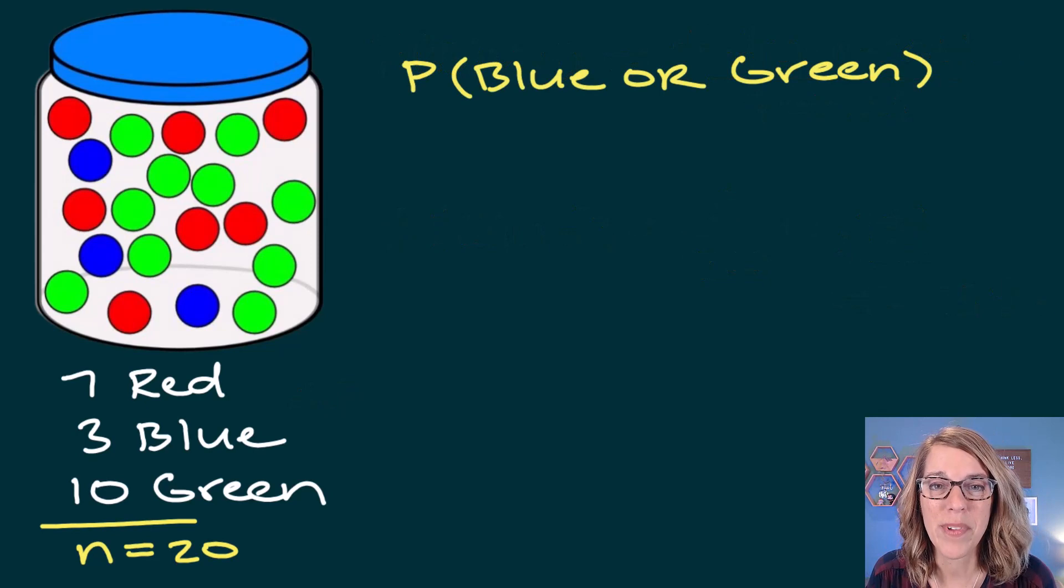Next, I've got the probability of drawing a single marble, and I want the probability of that marble being either blue or green. See if you can work this one out, put your answer in the comments, and then check with me.